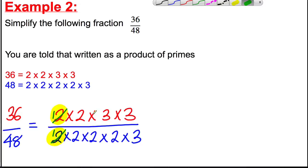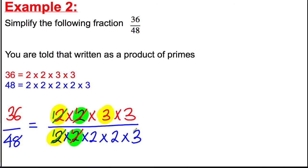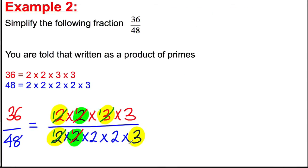There's another factor of 2 on top and bottom, so we divide again and get 1s. Then we have a 3 on top and a 3 on the bottom — a common factor — so we divide top and bottom by 3, getting 1s. We're left with 1 times 1 times 1 times 3, which is just 3, on the top. On the bottom we have 1 times 1 times 2 times 2 times 1, which is 4. So 3 quarters is the simplest fraction.